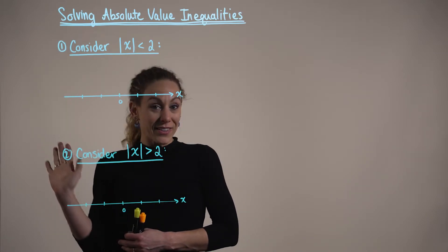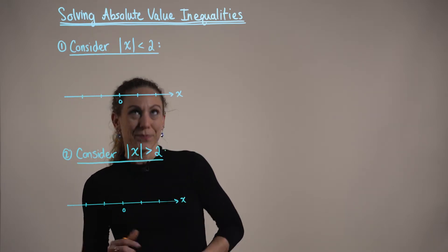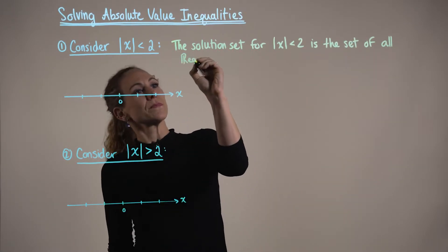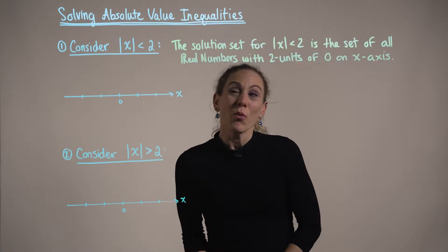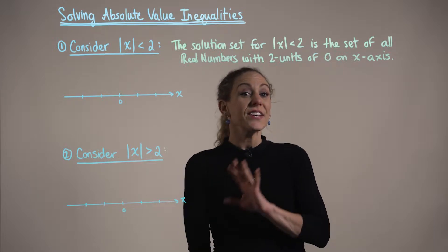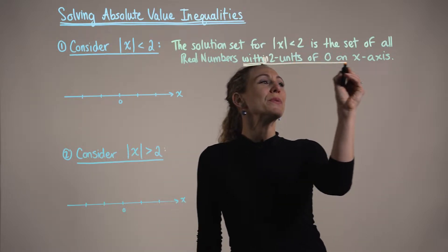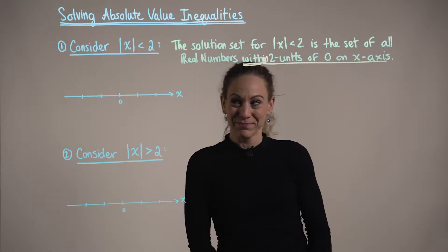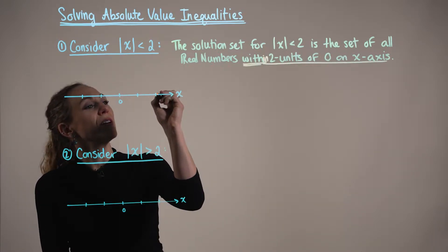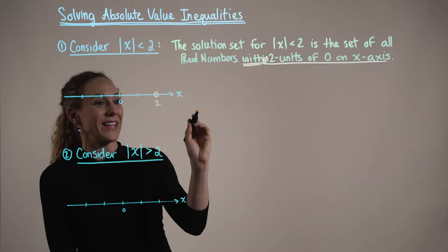For the first part, let's consider the absolute value of x being strictly less than 2. The solution set for the absolute value of x being strictly less than 2 is the set of all real numbers within 2 units of 0, or the origin, on the number line. Coming over to our number line, our x-axis, we're going to have an open circle at 2 because x is strictly less than this value.